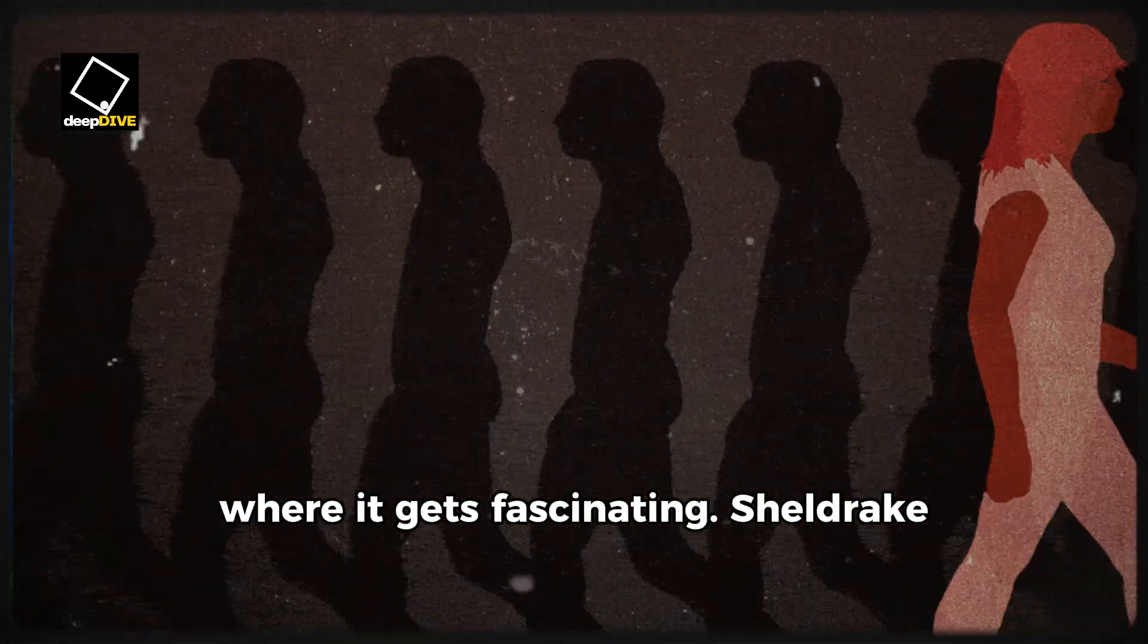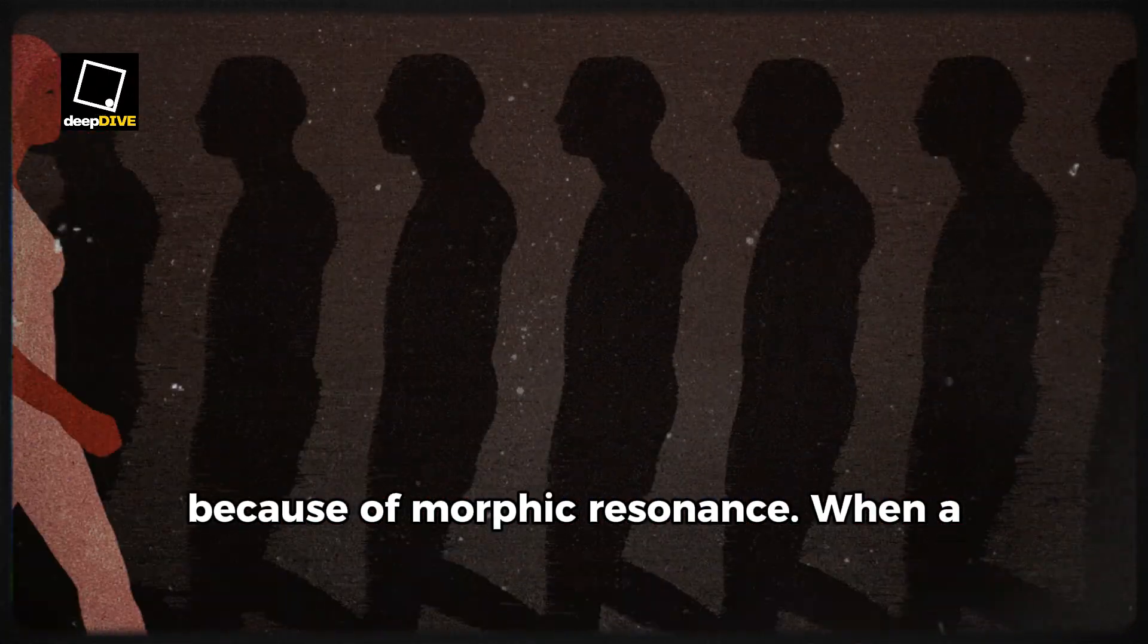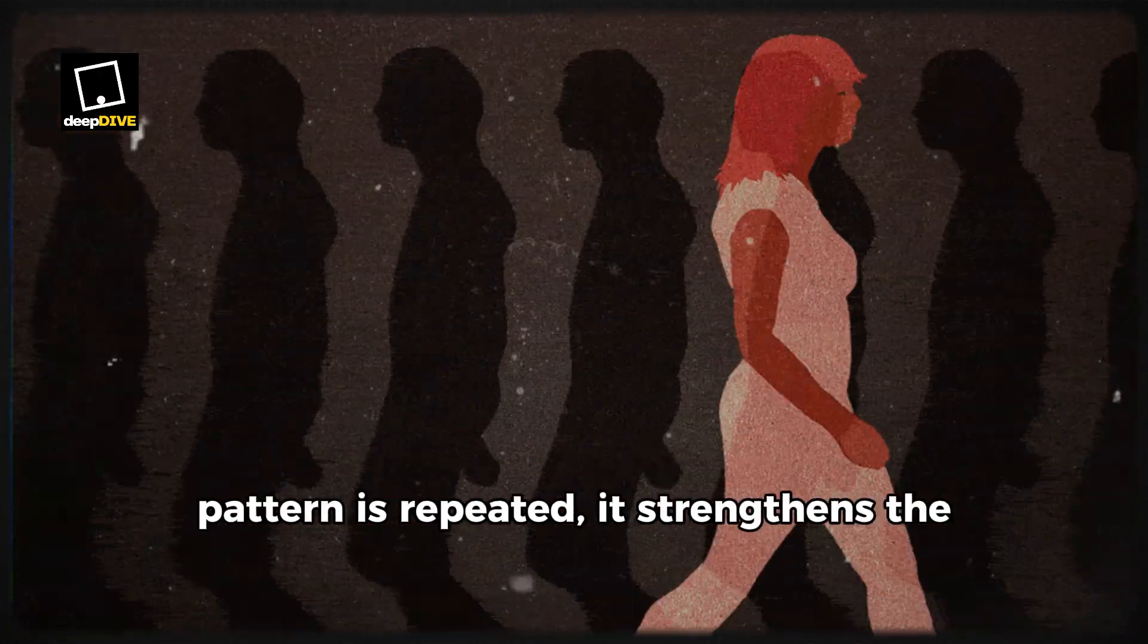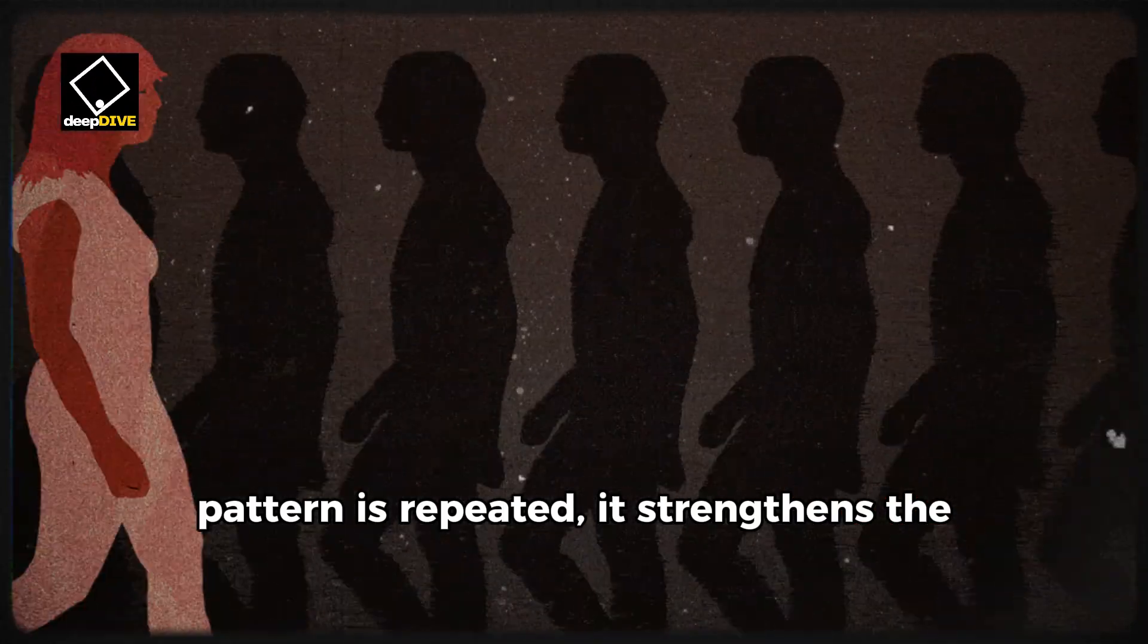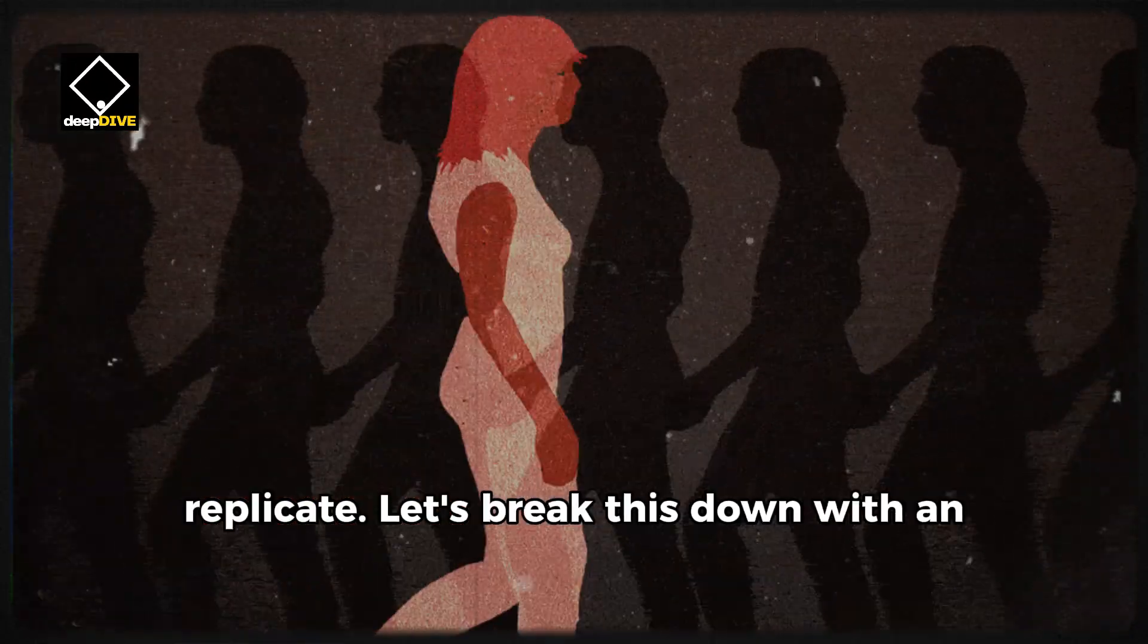Here's where it gets fascinating. Sheldrake posited that these phenomena occur because of morphic resonance. When a pattern is repeated, it strengthens the corresponding morphic field, making it easier for others to access and replicate.